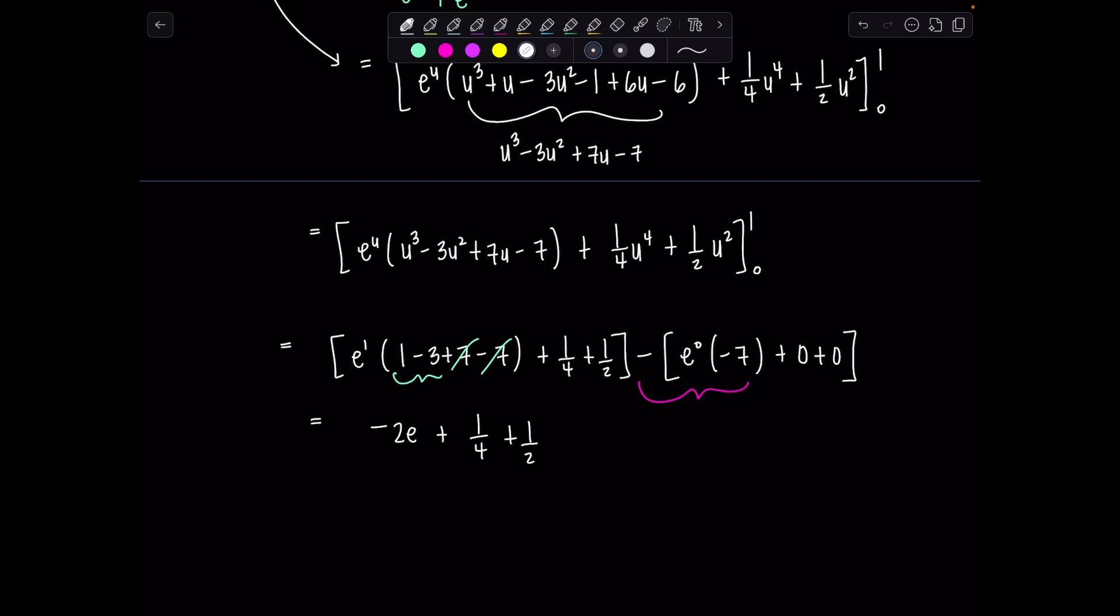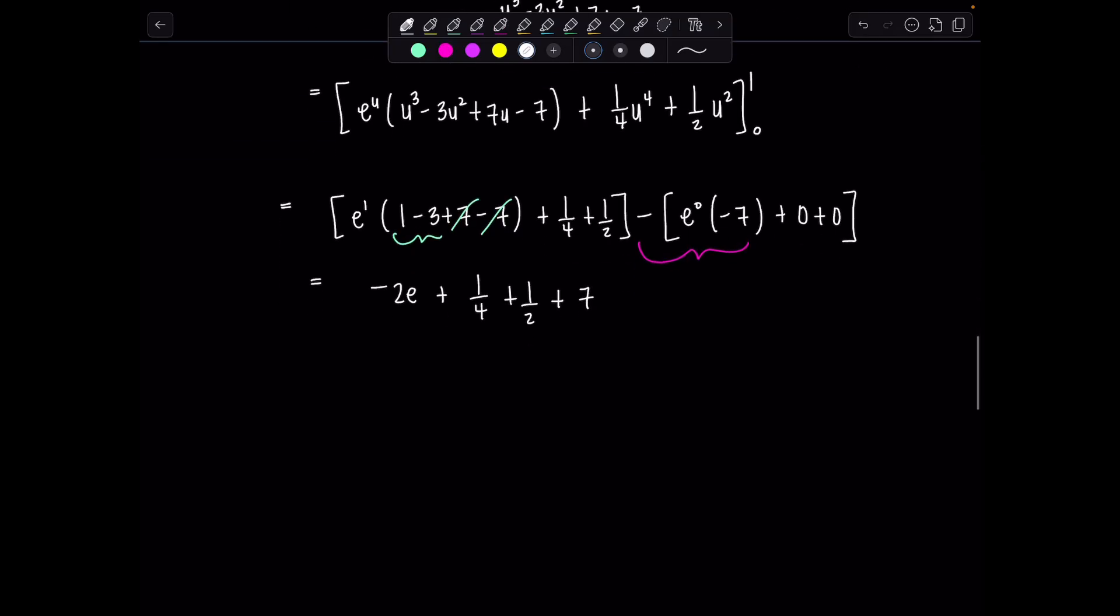So this is 28 over 4, and then that's going to be plus 2 over 4. So we're at 30 over 4, which is 31 over 4 minus 2e.